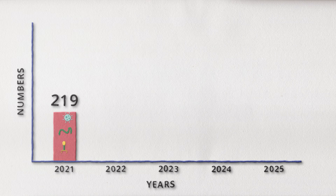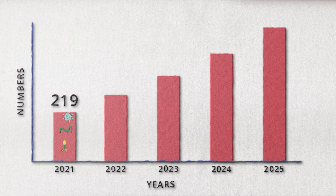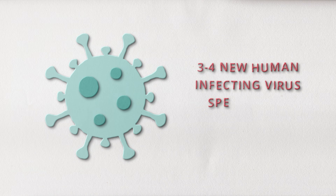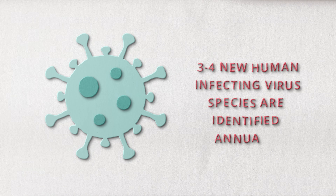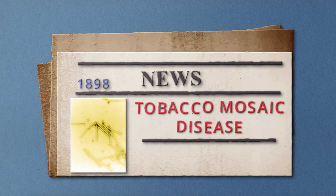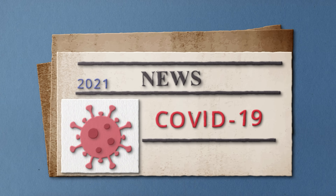Today, there are 219 virus species known to infect humans, and this number is growing every year. On average, three to four new human-infecting virus species are identified annually, and viruses make up over two-thirds of all human pathogens. It's been over a hundred years since we found the first virus, and there are still so many yet to be discovered — which is fascinating, yet scary.